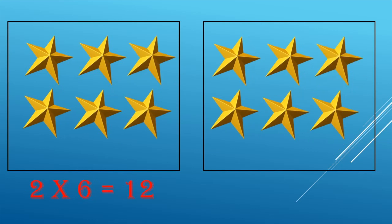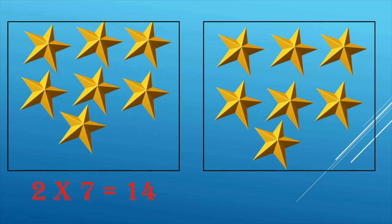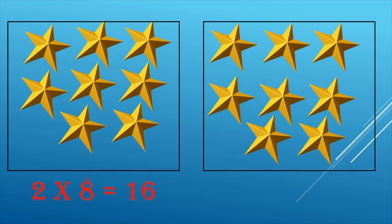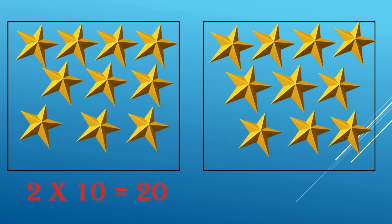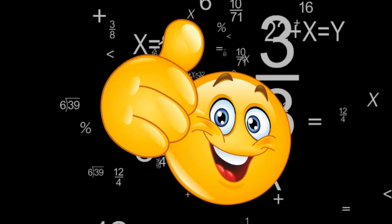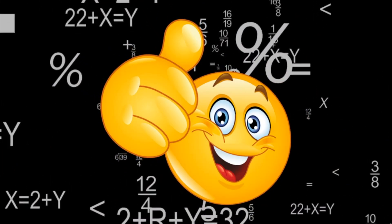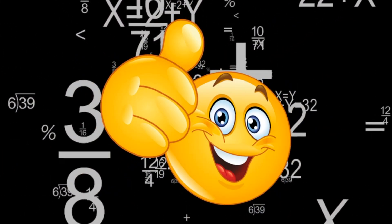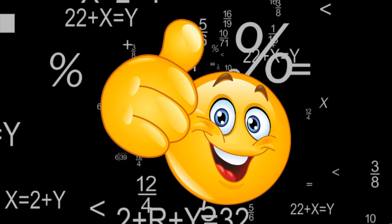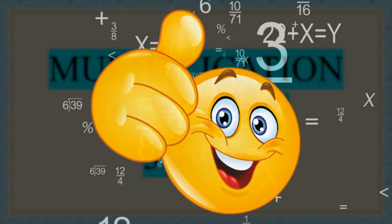Similarly, the tables of two will follow right up to two tens are twenty. I hope you had fun learning the tables of one and two using the pictorial method.